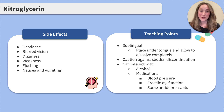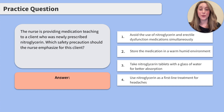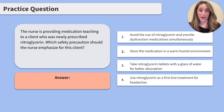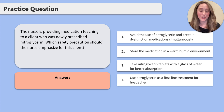Great job reviewing nitroglycerin. Let's work together through a practice question. The nurse is providing medication teaching to a client who has newly prescribed nitroglycerin. Which safety precaution should the nurse emphasize for this client? One, avoid the use of nitroglycerin and erectile dysfunction medications simultaneously. Two, store the medication in a warm, humid environment. Three, take nitroglycerin tablets with a glass of water for better absorption. Four, use nitroglycerin as a first-line treatment for headaches. Go ahead and press pause, make your choices, then when you're ready press play and we'll review the answers together.